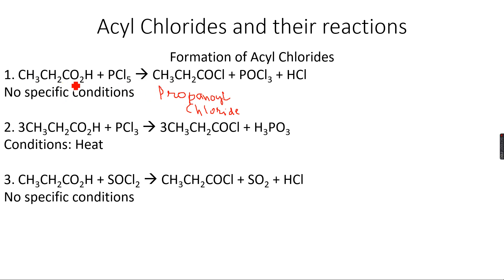If it was ethanoic acid I would get ethanoyl chloride; if it was butanoic acid I would get butanoyl chloride. So you have to learn it accordingly, but you have to learn the side products, which are POCl3 and HCl. In this case the side product is H3PO3.